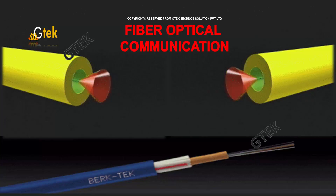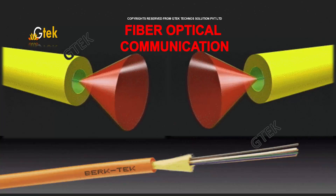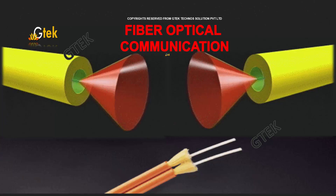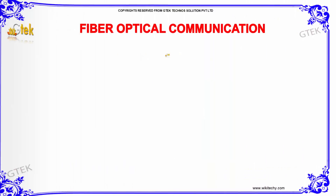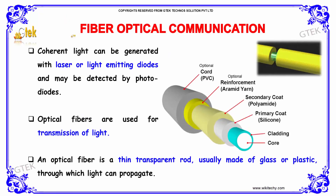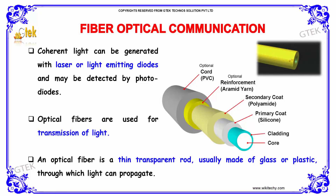This is a bit more advanced — that's your fiber optical communication. Coherent light can be generated with a laser or light emitting diodes and may be detected by photodiodes.